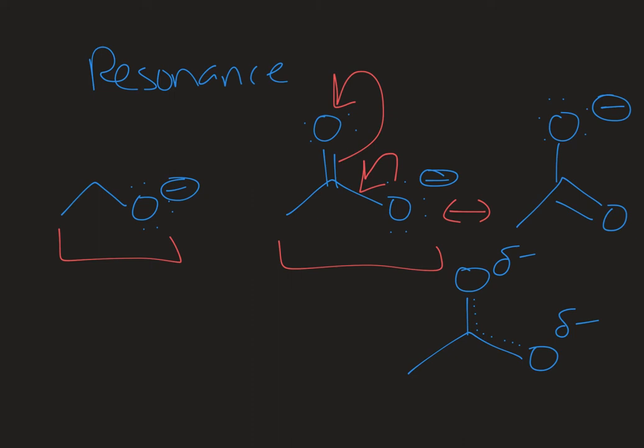Since these atoms are both oxygens and their electronegativity is the same, their affinity for electrons is equal and so it's more like there's a half of a negative charge on the top oxygen and a half on the bottom oxygen. And so that resonance is stabilizing that molecule because the charge is delocalized and spread out over more atoms.